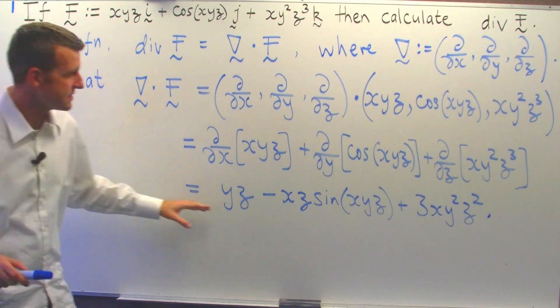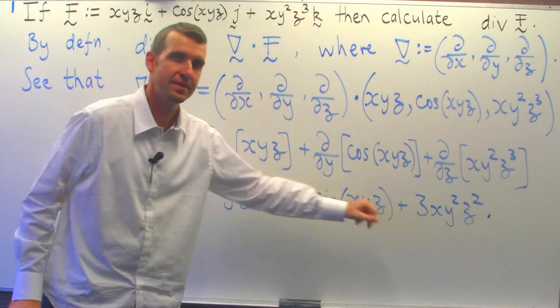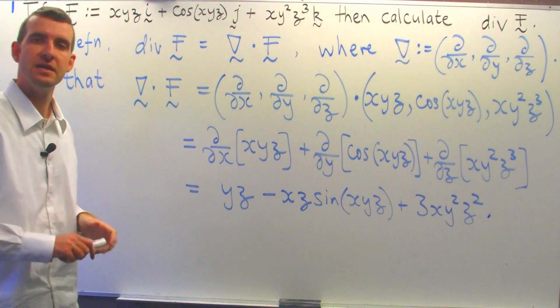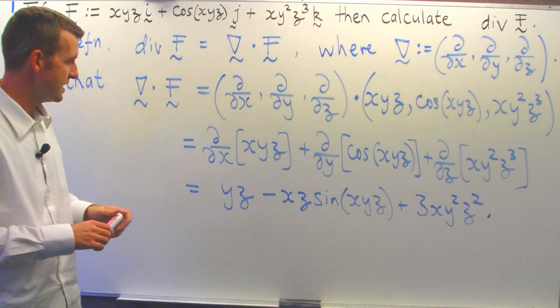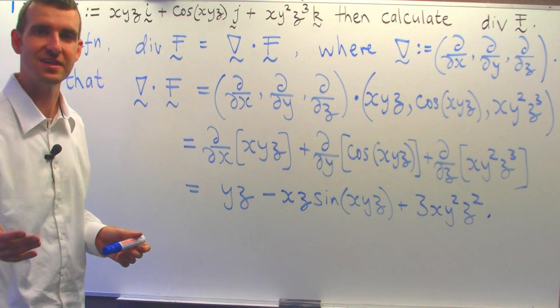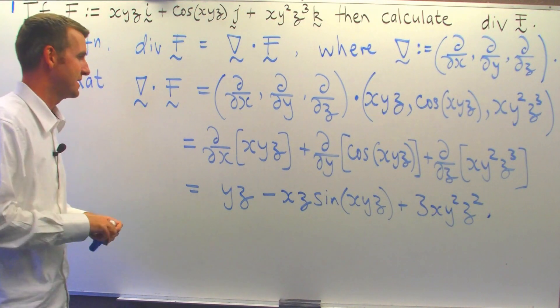So this is our answer. This new function is the divergence of this particular vector field. So, a few things to acknowledge here. Note that this is not a vector field. It's a scalar valued function, a real valued function.